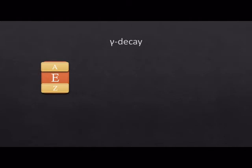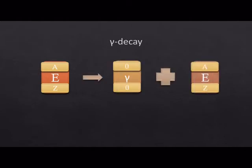When an element undergoes gamma decay, neither its atomic number nor its atomic mass number changes. Gamma radiation only sheds off some excess energy which the element has.